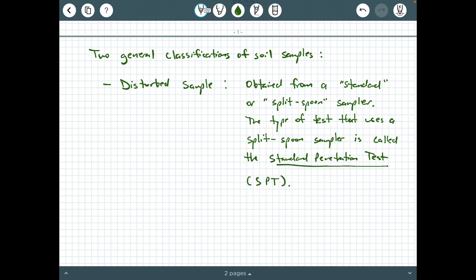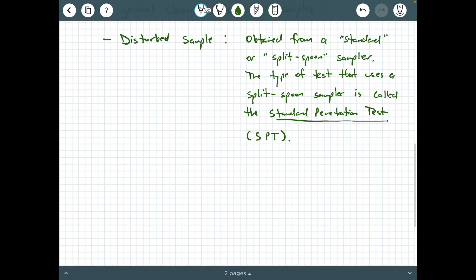The other type of classification for a soil sample is called an undisturbed sample. And these samples are obtained from what's called a Shelby tube sampler.